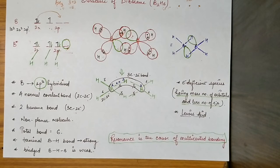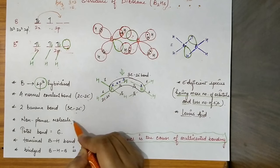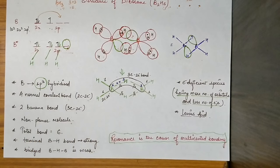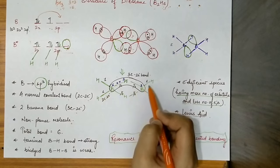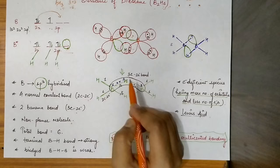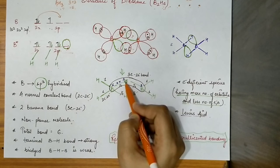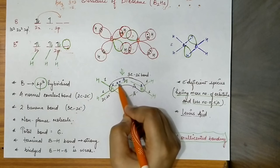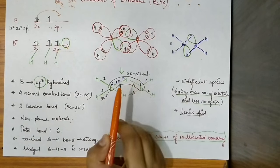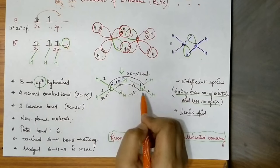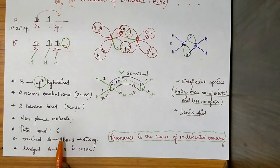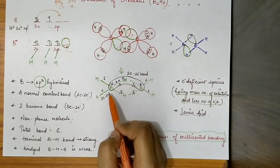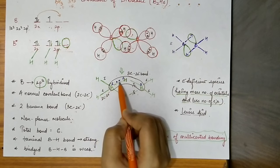Always remember that B2H6 is a non-planar molecule. Also, the B–H bond in this structure is essentially half a bond. Each contributes half, and together they form one bond. So in total we have six bonds. Now, one more thing: which bond is stronger — the terminal boron–hydrogen bond or the bridge boron–hydrogen bond?